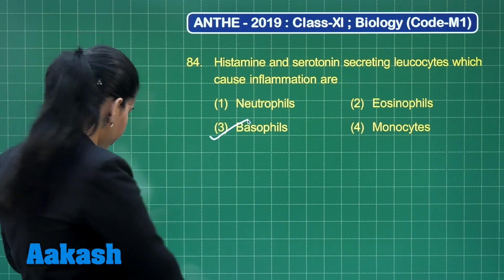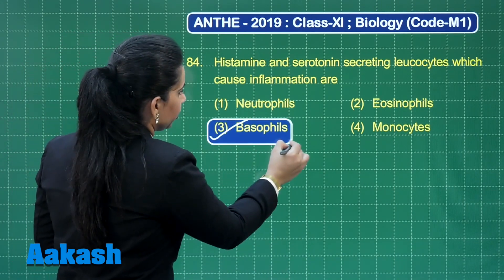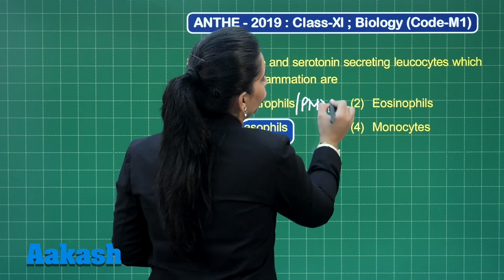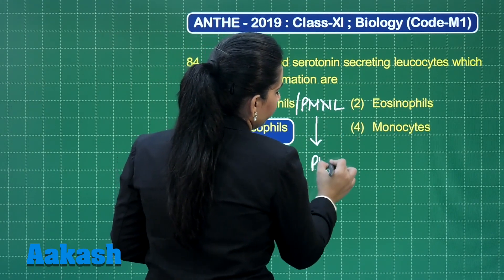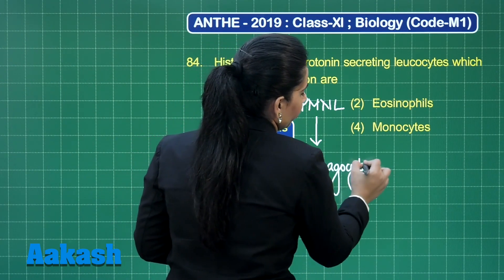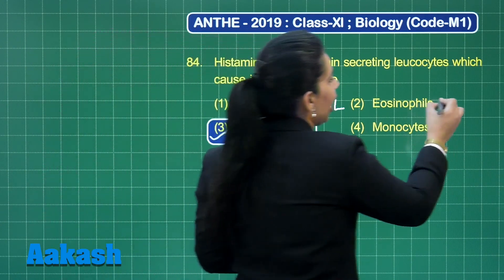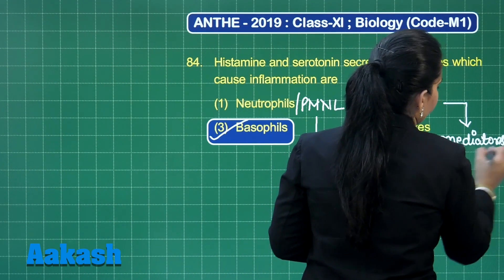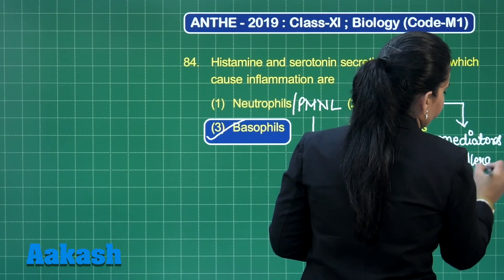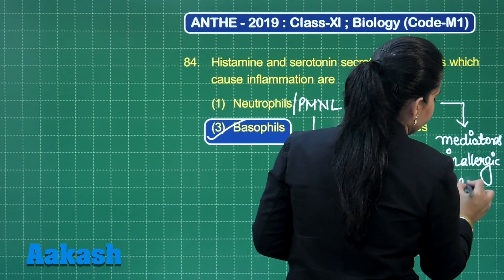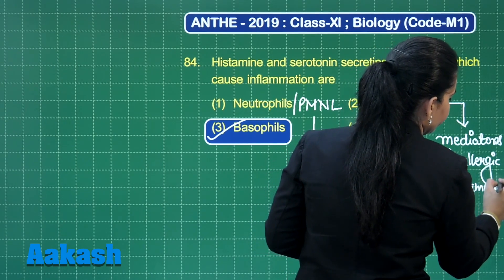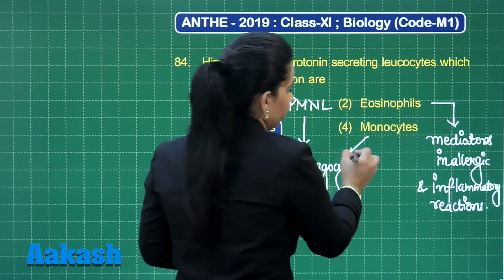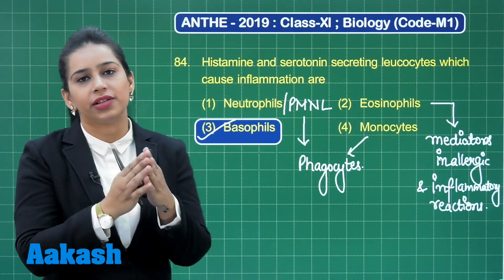The correct answer to this question is option number 3. Let us have a look at the other options too. Neutrophils, also called polymorphonuclear leukocytes, are actually phagocytes. Eosinophils are mediators in allergic and inflammatory reactions. Monocytes are again phagocytes. So the correct answer is option number 3, that is basophils.